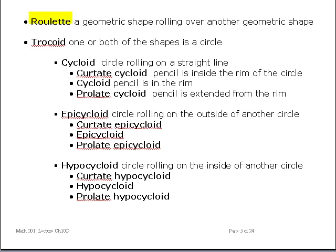Again, we call the curve that is traced out by having some geometric shape, such as a circle or a parabola, roll without slipping or dragging over another shape, the roulette. Now, if one or both of those shapes is a circle, then the roulette is called a trochoid. This actually should be indented because a trochoid is a special kind of a roulette.